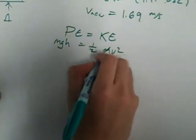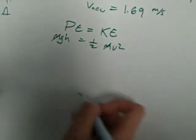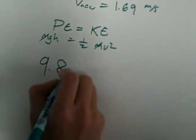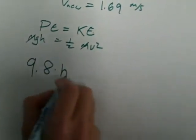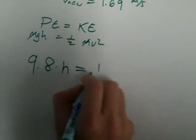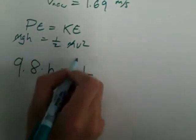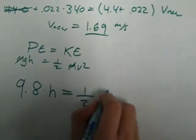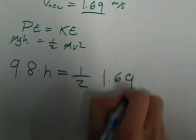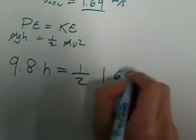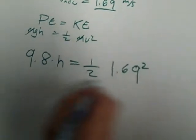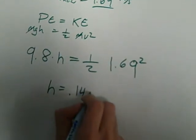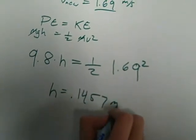The m's can cross out, g is 9.8 times h, which we will find, that equals 1/2 v², and v we can use this one right here, so 1.69 squared. And then solving for h, we get 0.1457 meters.